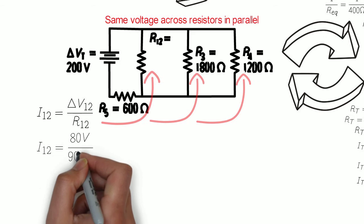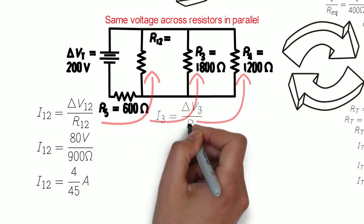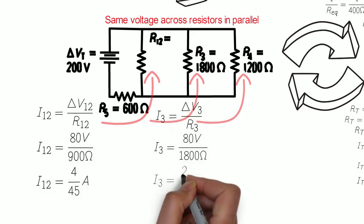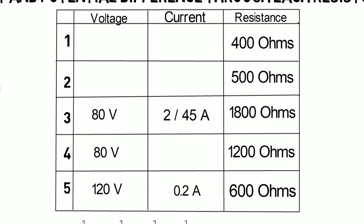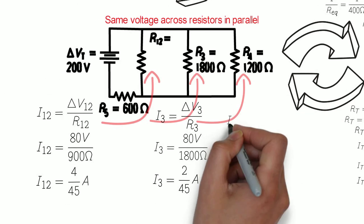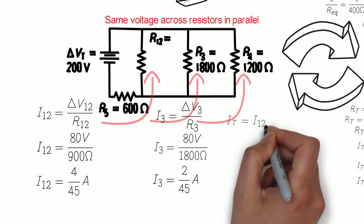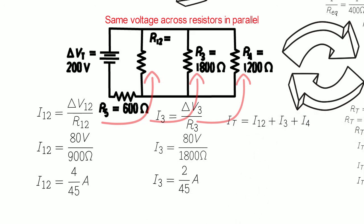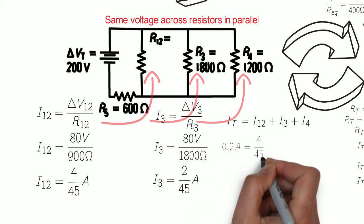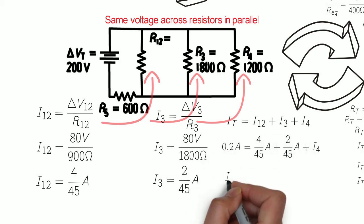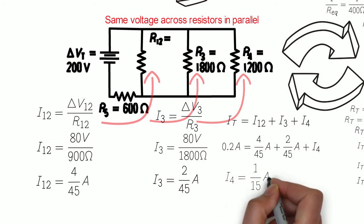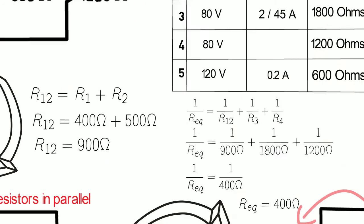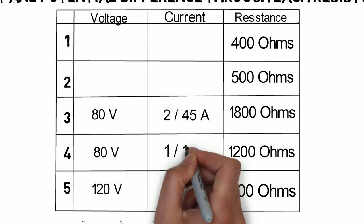Through I12 we get 4 over 45 amps. Through R3 we get 2 over 45 amps. And for R4 we can use Ohm's law again, or we can use Kirchhoff's current law for a parallel circuit, which says that the current through each parallel resistor adds together to the total current. And if we do it this way, we can get I4 to be 1 over 15 amps.